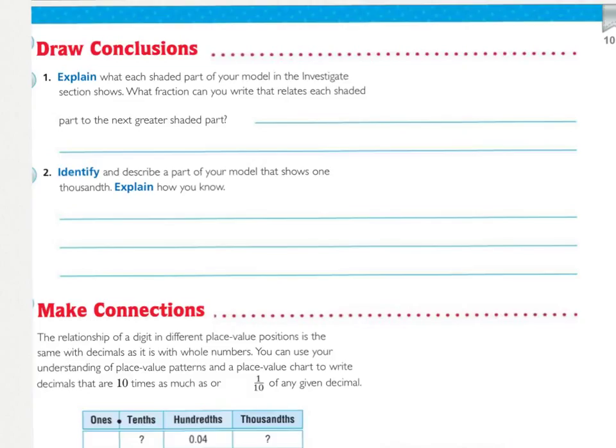Turn your page over, draw conclusions, explain what each shaded part of your model in the investigation section shows. Shaded part, the ones that you colored. What fraction can you write that relates each shaded part to the next greater shaded part? So, there's two different things to do here, there's to explain, and then to see what fraction you can use to relate them.